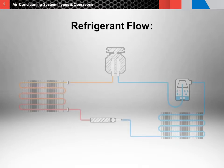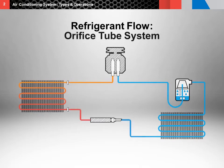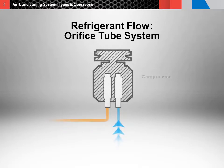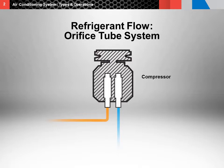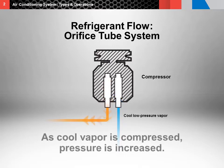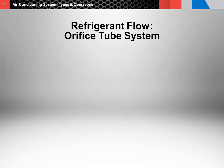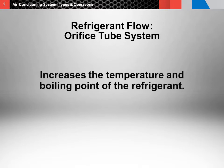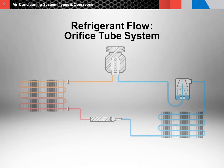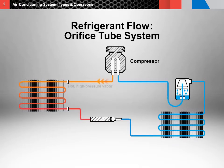Now let's take a look at refrigerant flow in orifice tube air conditioning systems. With orifice tube systems, the refrigerant flows through the compressor the same as the expansion valve system. The refrigerant is drawn into the compressor as a cool, low pressure vapor. As it flows through the compressor, the refrigerant is compressed, increasing high side system pressure. This increase also increases the temperature and boiling point of the refrigerant. The refrigerant exits from the discharge port of the compressor as a hot, high pressure vapor refrigerant through the high pressure hose to the inlet port of the condenser.